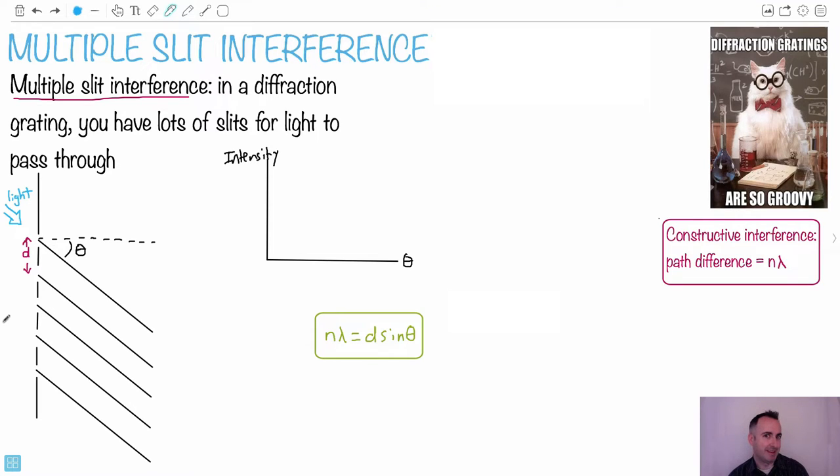Diffraction gratings are so groovy. I've also seen it as diffraction great, G-R-E-A-T. But let's talk about this. We have multiple slit interference. What does that mean? Here you have what's called a diffraction grating, which means you have a whole bunch of different openings for the light to pass through. Because of that, we could define this D over here. That could be the slit separation.